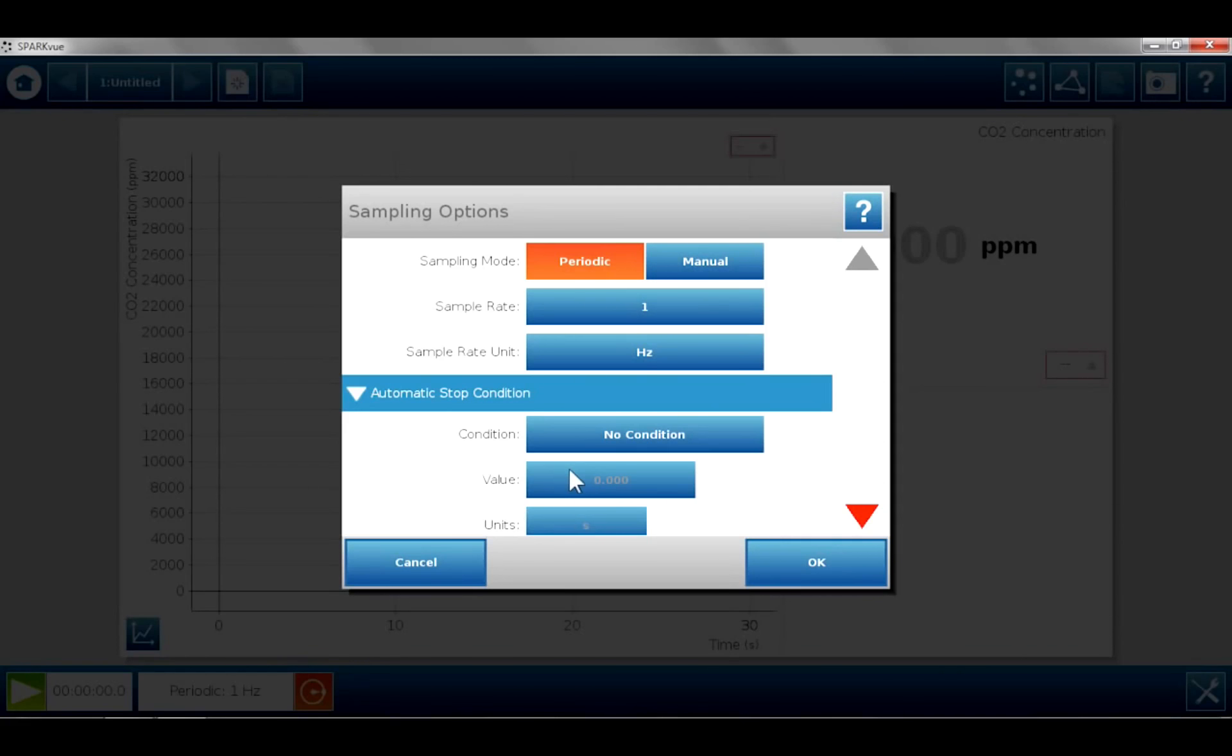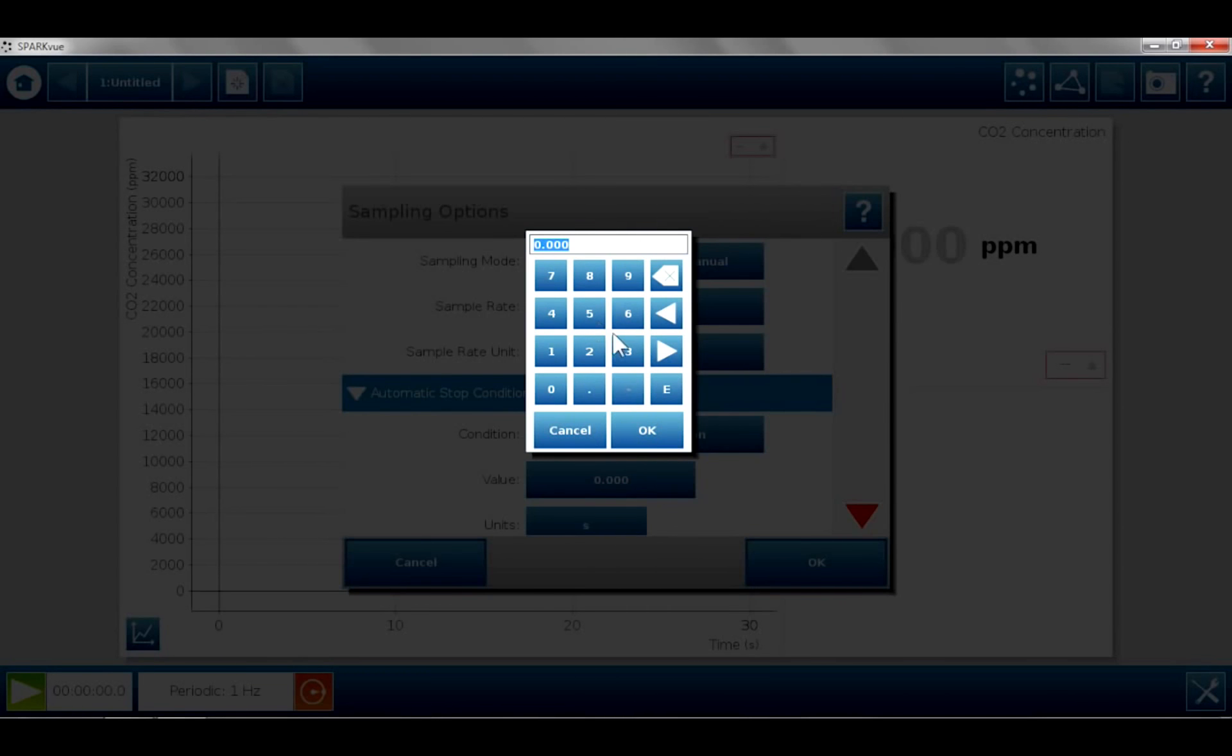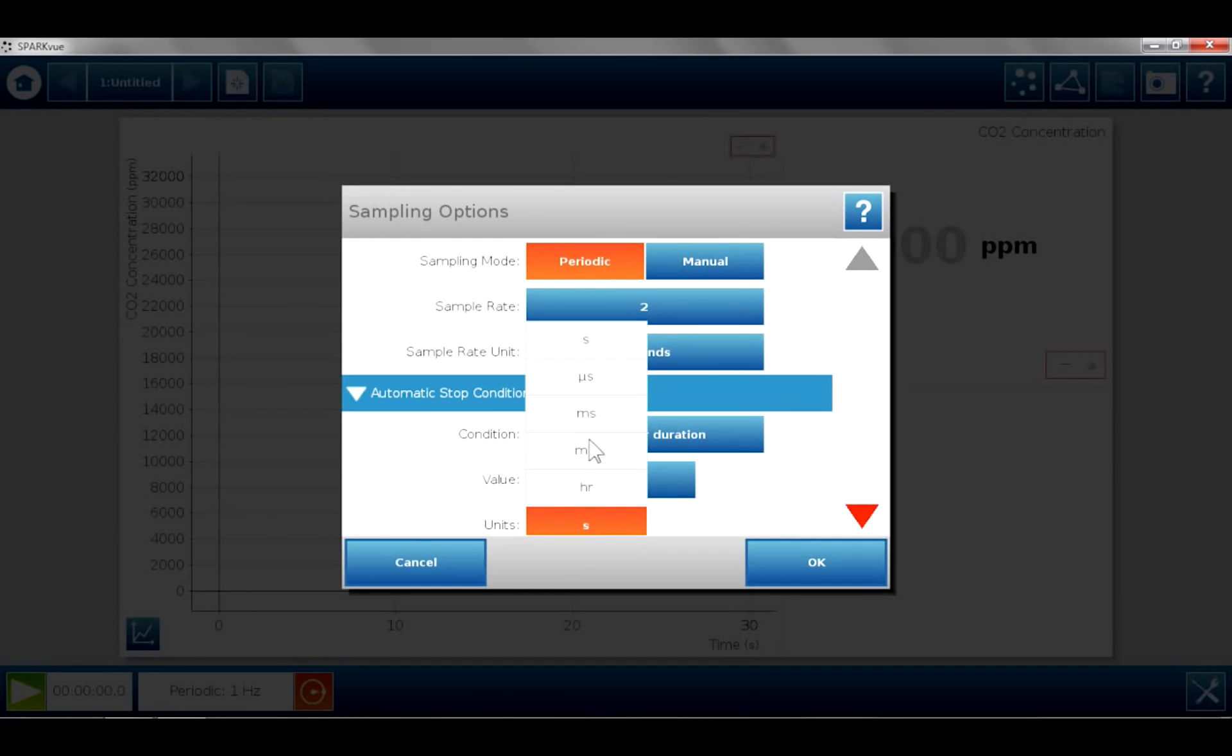For this lab, it will take 5 to 10 minutes to collect data. So I'm going to change the sample rate. Right now it's 1 hertz. I'm going to change that to seconds and have it collect data every 2 seconds. If you'd like to have the data collection stop at an automatic time, you can set a stop time, say 3 minutes.